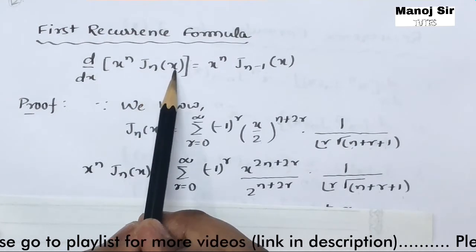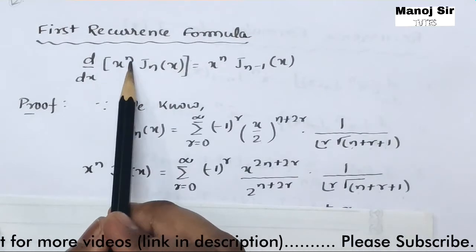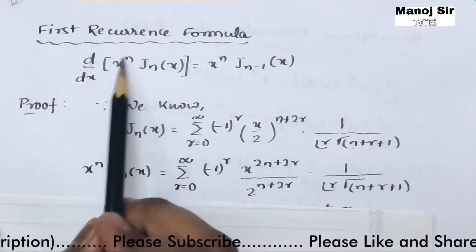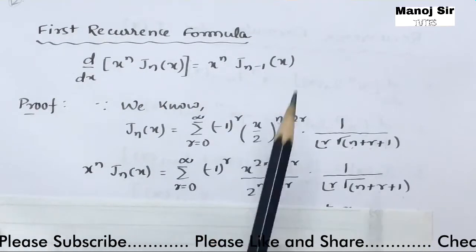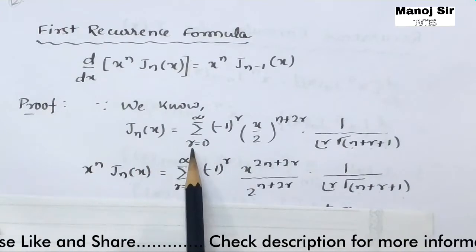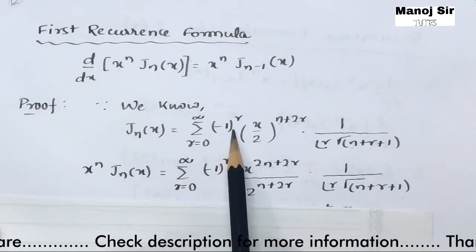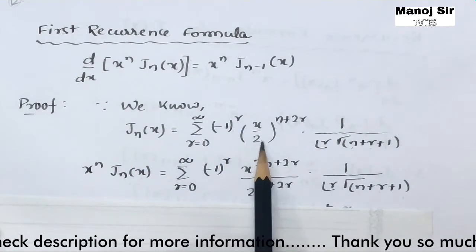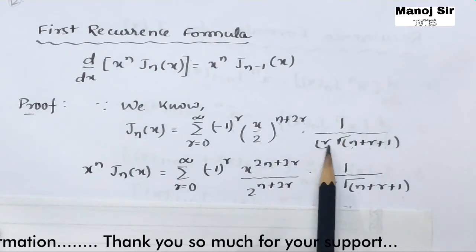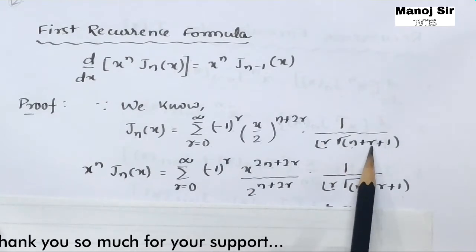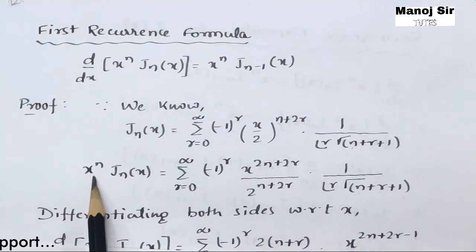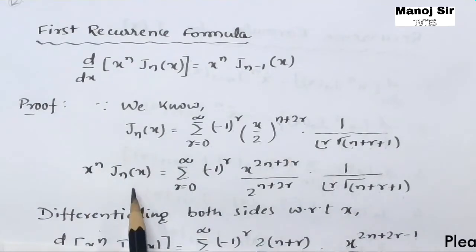Our approach: first we look at what J_n(x) is, then multiply by x^n, then differentiate with respect to x and verify the formula. Since we know that J_n(x) equals summation r=0 to infinity of (-1)^r times (x/2)^{n+2r} times 1 over (r! times Gamma(n+r+1)).